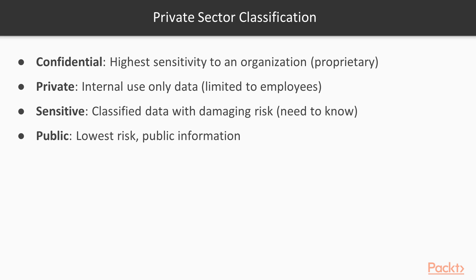A step down from that is what we call Sensitive. This is classified data which also carries a damaging risk to the company. You might have heard people say things like 'need to know basis' — this is that kind of data. Certain employees don't need to know certain things. For example, if you had a list of employees who were going to be laid off, that would be classified as Sensitive; not all employees need to know that. Finally, at our lowest risk is Public information — this is information you'll probably have on your company's website, brochures, advertising, or anything that is not sensitive or risky at all.